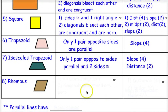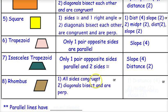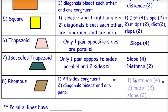For a rhombus, which has four congruent sides, I can use the distance formula four times to show all sides are congruent. Or I can show the diagonals bisect each other and are perpendicular: midpoint formula twice to show the diagonals bisect each other, making it a parallelogram, and then the slope formula twice to show the diagonals are perpendicular, which makes it a rhombus.